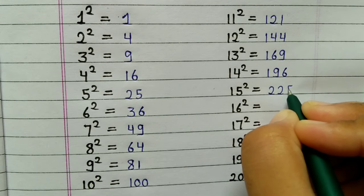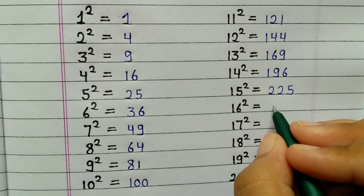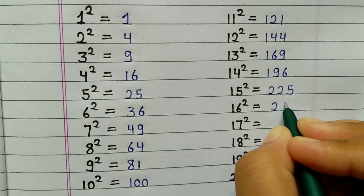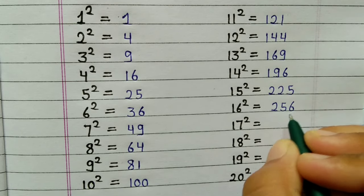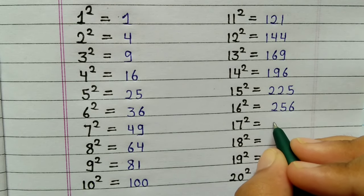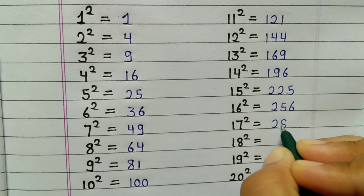15 squared is 225, 16 squared is 256, 17 squared is 289.